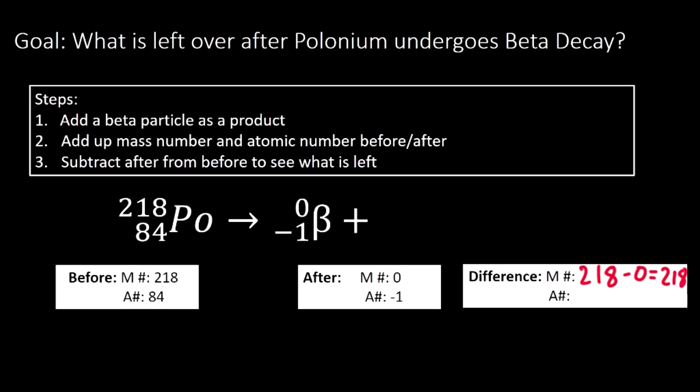The atomic number is more interesting. We start with 84. That's what we had before. And we subtract a negative one. When I subtract a negative number, remember what I'm going to be doing is actually adding. So those two negatives combine, they cancel out and they give me just a plus sign. So 84 minus a negative one is actually 85. The element left over is 218 for the mass number and 85 for the atomic number.